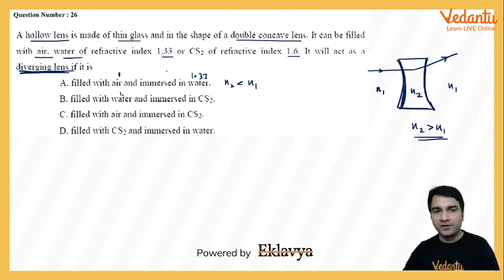Case number two, filled material is water with refractive index 1.33 and immersed material is CS2. Again, yahan par N2 is less than N1.